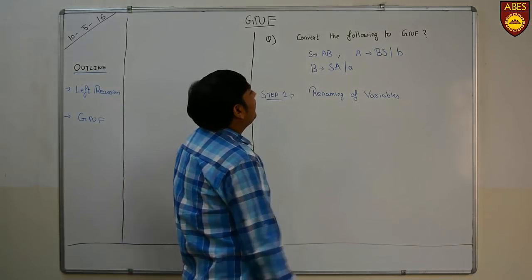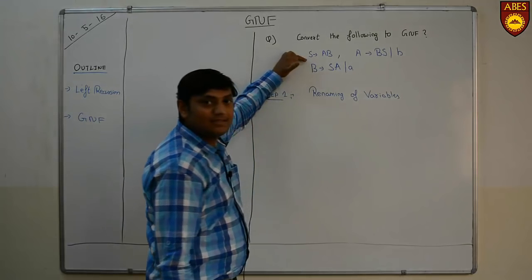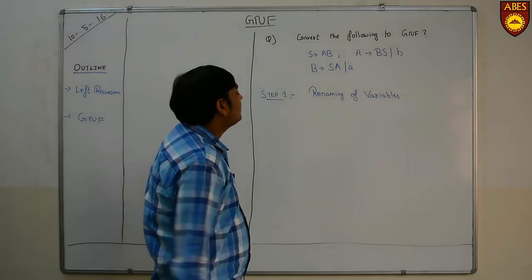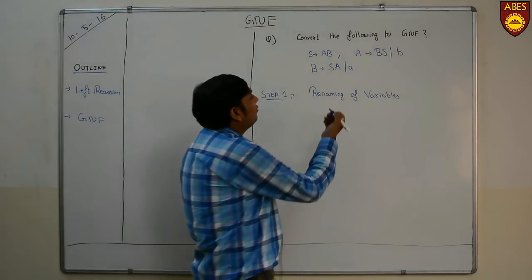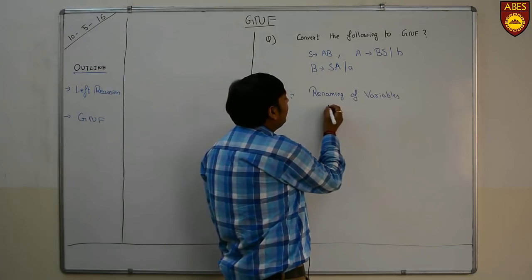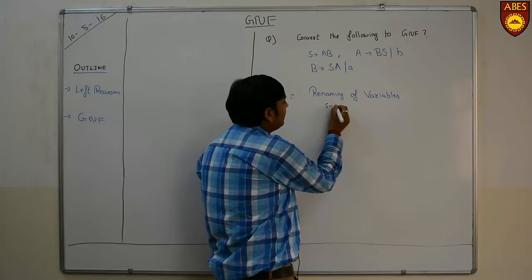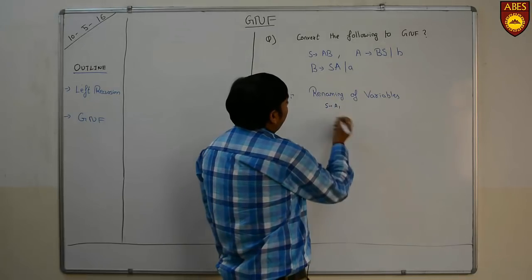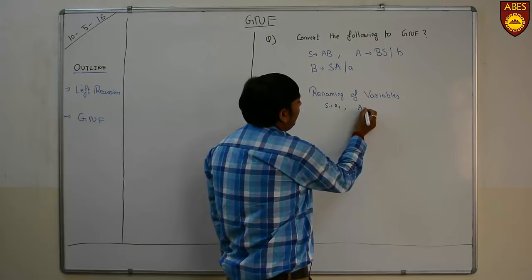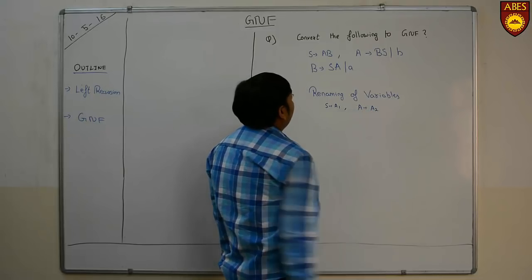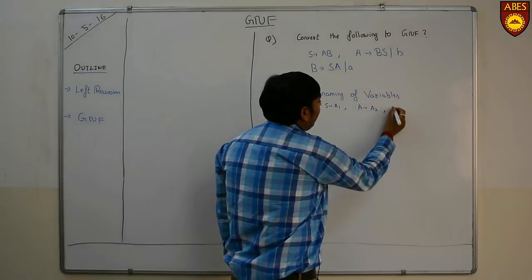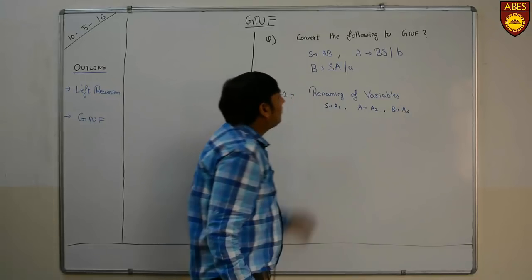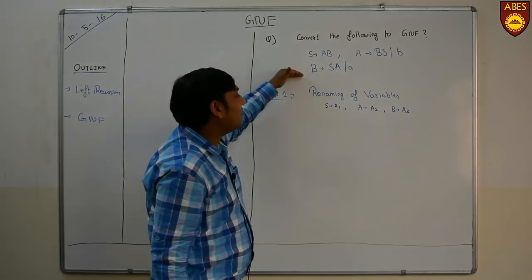Here we are taking variables as S, A, and B. The first step is we need to rename the variables. We are taking S as A1, renaming A as A2, and B as A3.